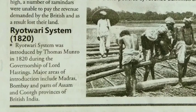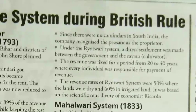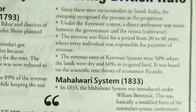The second one is the Ryotwari System, 1820. It was introduced by Thomas Munro in 1820 during the governorship of Lord Hastings. Major areas of introduction include Madras, Bombay, and parts of Assam and Coorg provinces of British India. Since there were no Zamindars in South India, the company recognized the peasant as a proprietor. Under the Ryotwari system, a direct settlement was made between the government and the Ryot, meaning the cultivator. The revenue was fixed for a period of 20 to 40 years.